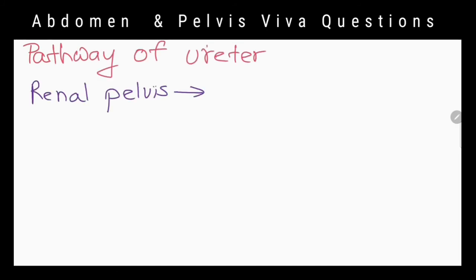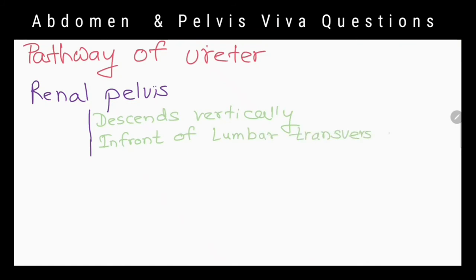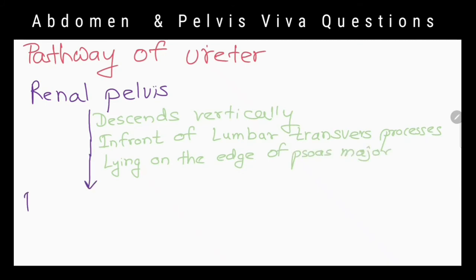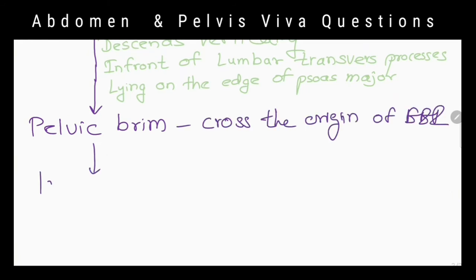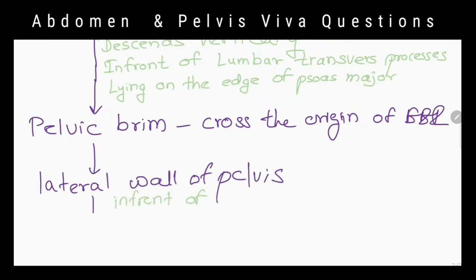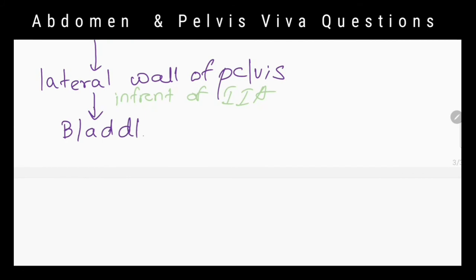Tell me the pathway of the ureter. It begins as a continuation of the renal pelvis. It descends almost vertically in front of the lumbar transverse processes, lying on the edge of psoas major. At the pelvic brim, it crosses the origin of the external iliac artery and enters the lesser pelvis. Then it runs on the lateral wall of the pelvis in front of the internal iliac artery and passes obliquely through the bladder wall in an inferomedial direction.